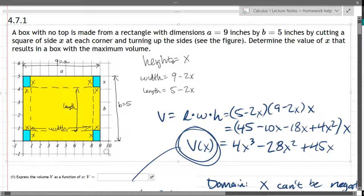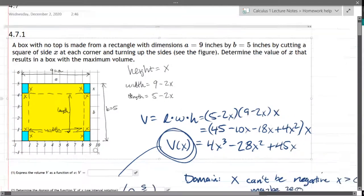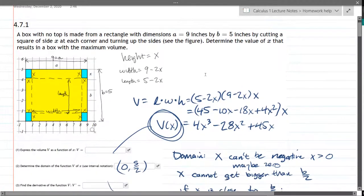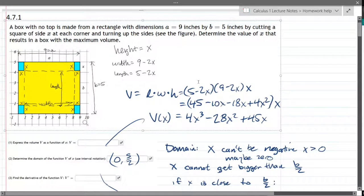And so we're going to take the derivative and set it equal to zero. This question did ask about the domain. Now, normally on a polynomial, your domain's all real numbers. In the context of this word problem, it makes no sense for x to be negative or even zero. So it's got to be a positive number.